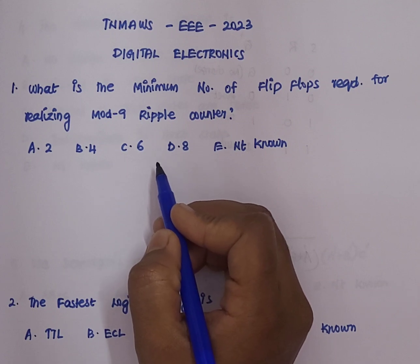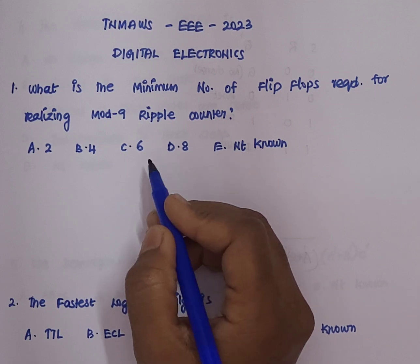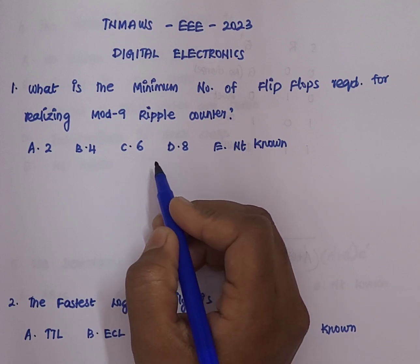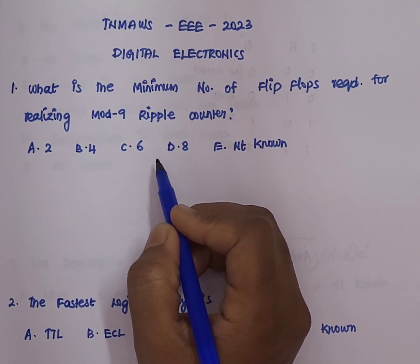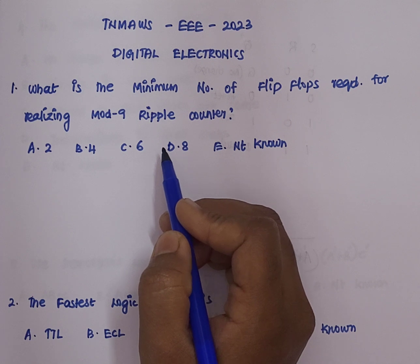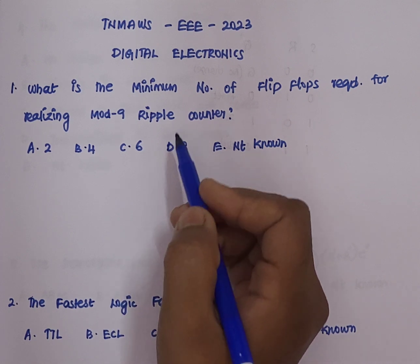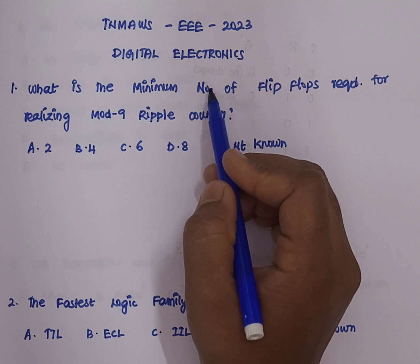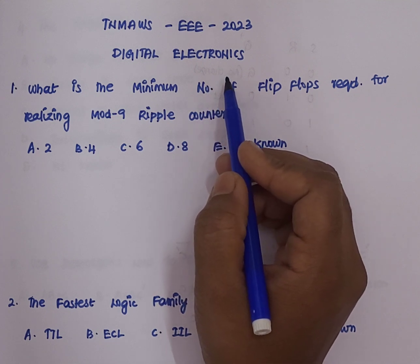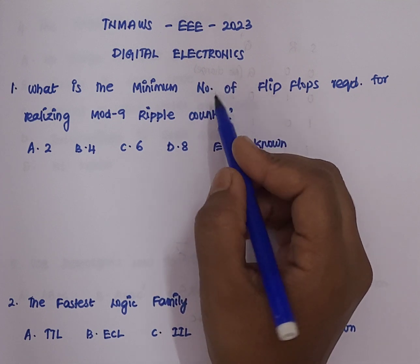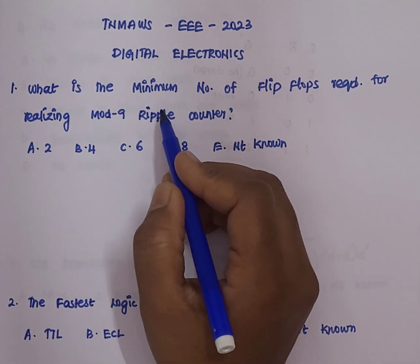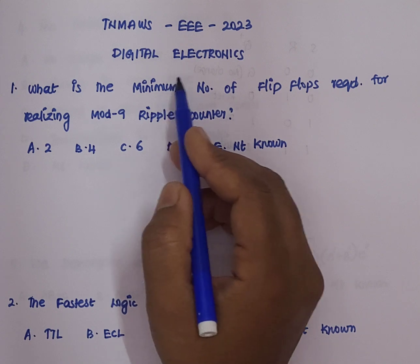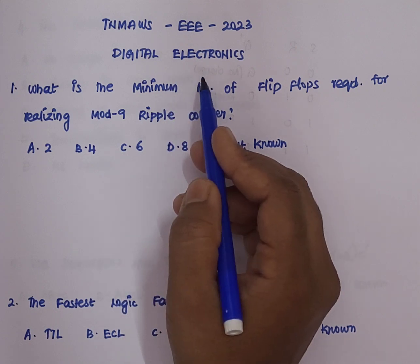Hello friends, welcome to Learners Forum. In this video we will solve the question paper from TNMAWS, that is Tamil Nadu Municipality Administration and Water Supply. This question paper is for the department of EEE and the year taken is 2023. Now we will solve the questions based on the subject of digital electronics.